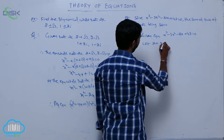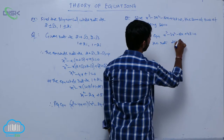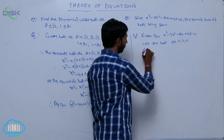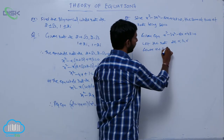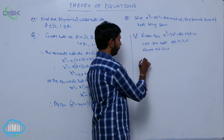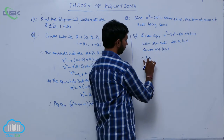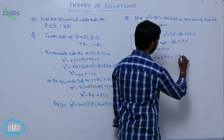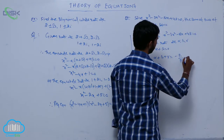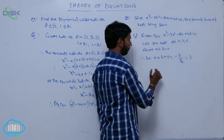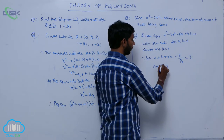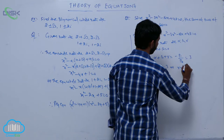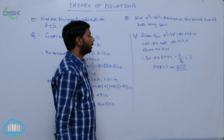Let the roots be alpha, beta, and gamma. Given that the sum of two roots, alpha plus beta, equals 0. Therefore S1, which is alpha plus beta plus gamma, equals minus P1 by P0, that is equal to 3. Since alpha plus beta equals 0, we get gamma equals 3. So one root is gamma equals 3.